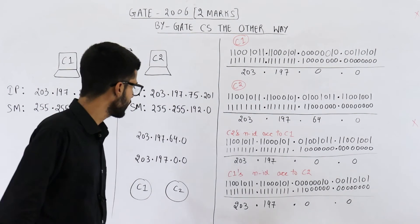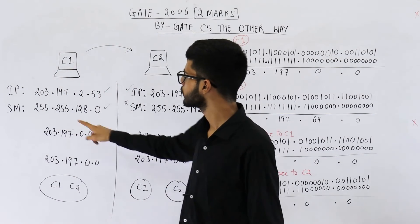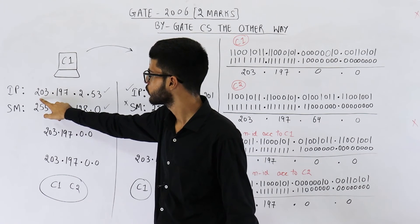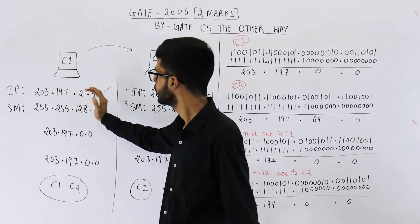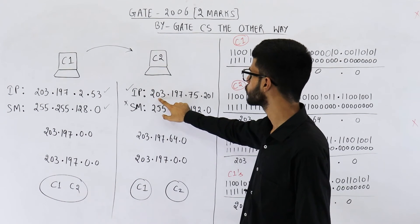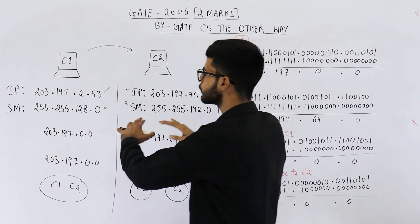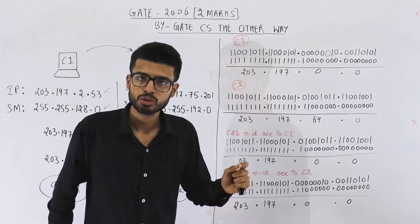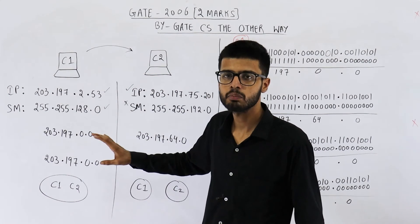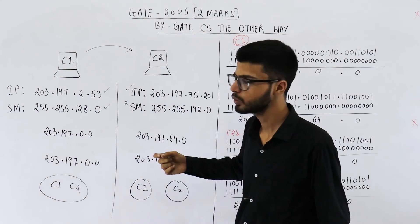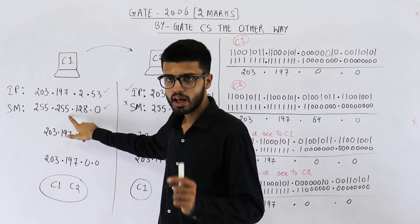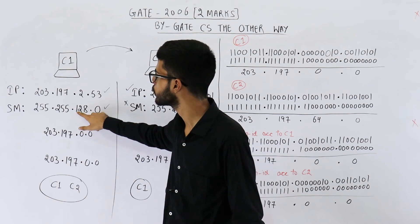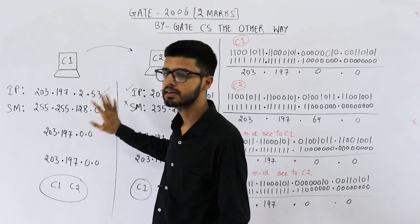One doubt that students often have: they think this is a class C network, so the network ID would be the first three octets — 203.197.2 and 203.197.75 — meaning both belong to entirely different networks and simply take option D. But here we are using classless IP addressing. How do I know? Using these subnet masks. Had it been a class C address, the subnet mask would have 255 in the third octet, but we have only 128, meaning only the first bit of that octet is used for the network ID. This is classless addressing.